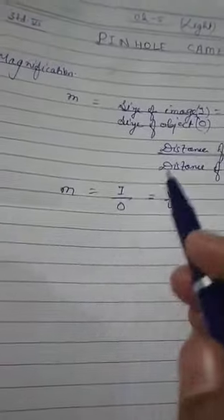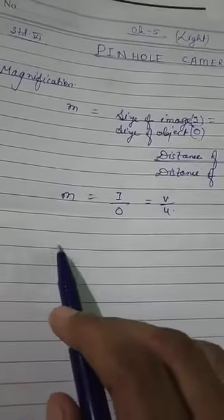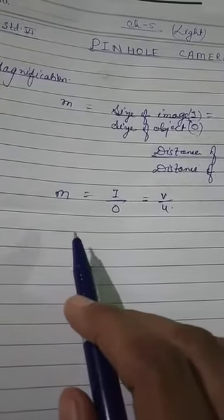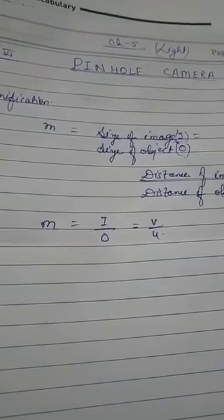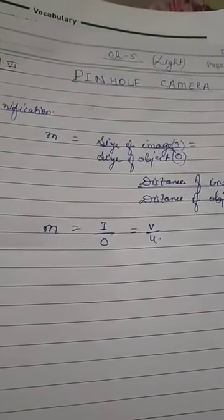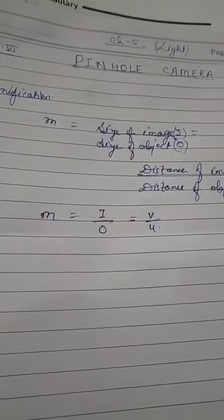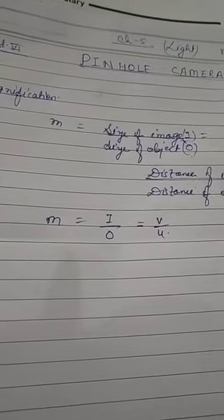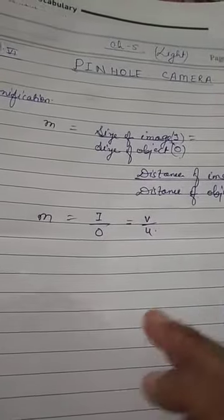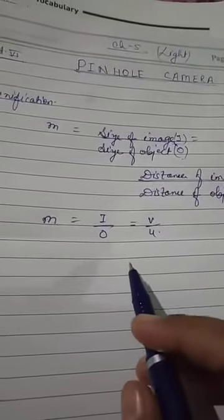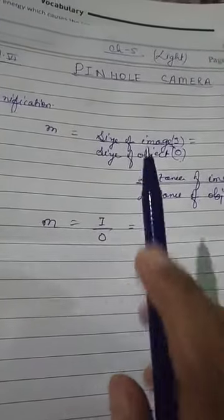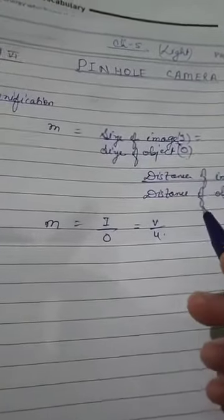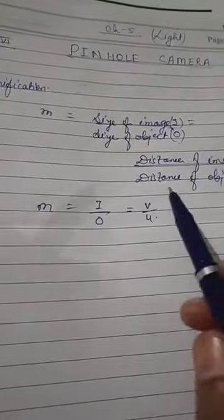There are also disadvantages of the pinhole camera. First: the image is obtained on a screen, and no permanent record of the image can be maintained. As long as the object is in front of the camera you can see its image on the screen, but if you remove the object from in front of the camera, there will be no image on the screen. So a permanent record of the image is not possible — unlike a general camera where we can keep a permanent record.